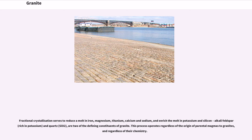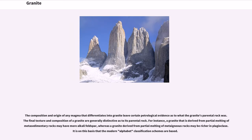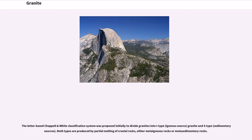This process operates regardless of the origin of parental magmas to granites, and regardless of their chemistry. The composition and origin of any magma that differentiates into granite leaves certain petrological evidence as to what the granite's parental rock was. The final texture and composition of a granite are generally distinctive as to its parental rock. For instance, a granite derived from partial melting of metasedimentary rocks may have more alkali feldspar, whereas a granite derived from partial melting of metaigneous rocks may be richer in plagioclase. It is on this basis that the modern alphabetical classification schemes are based. The letter-based Chappell and White classification system was proposed initially to divide granites into I-type (igneous source) granite and S-type (sedimentary source). Both types are produced by partial melting of crustal rocks, either metaigneous rocks or metasedimentary rocks.